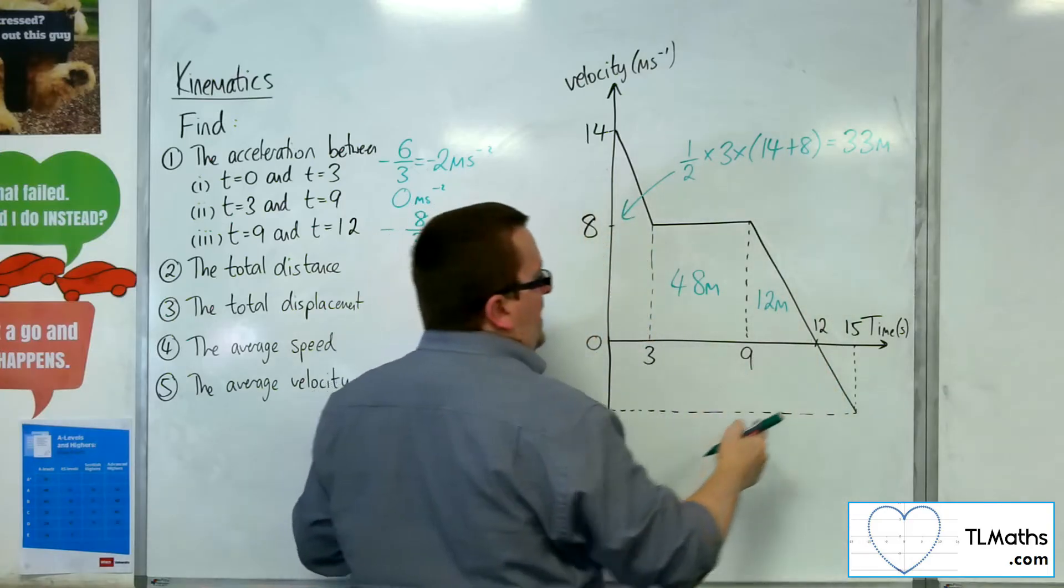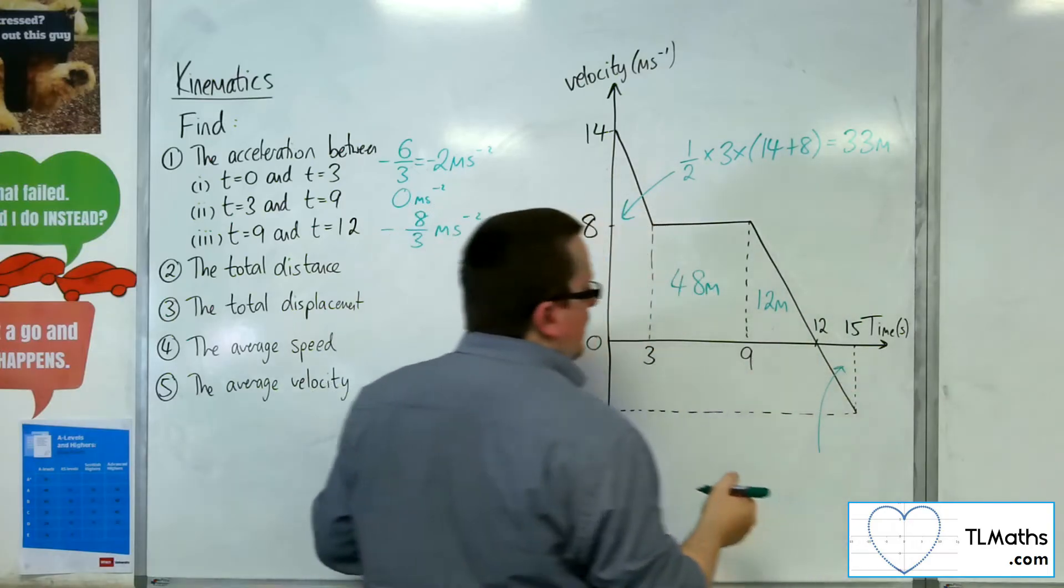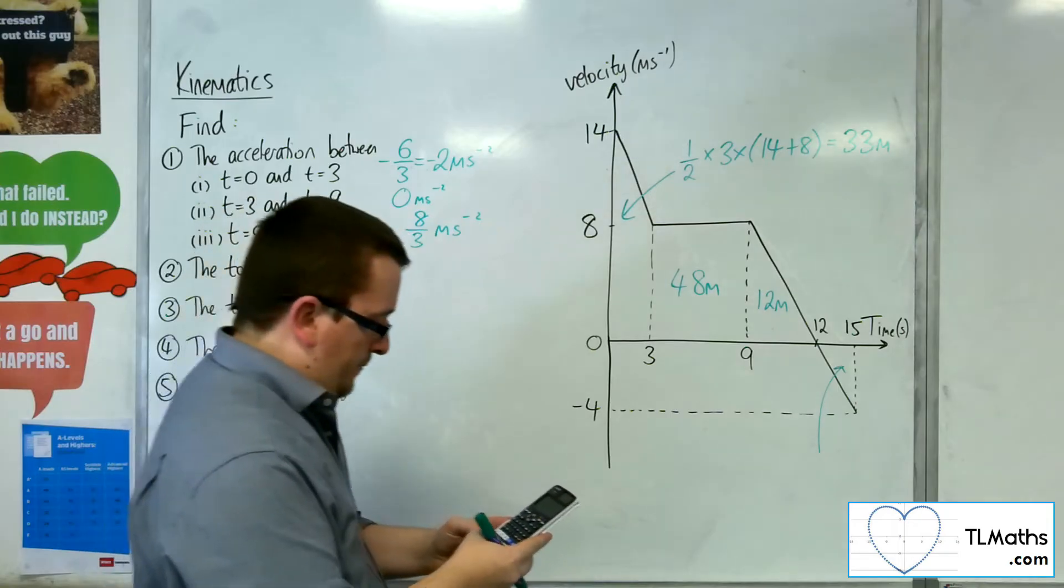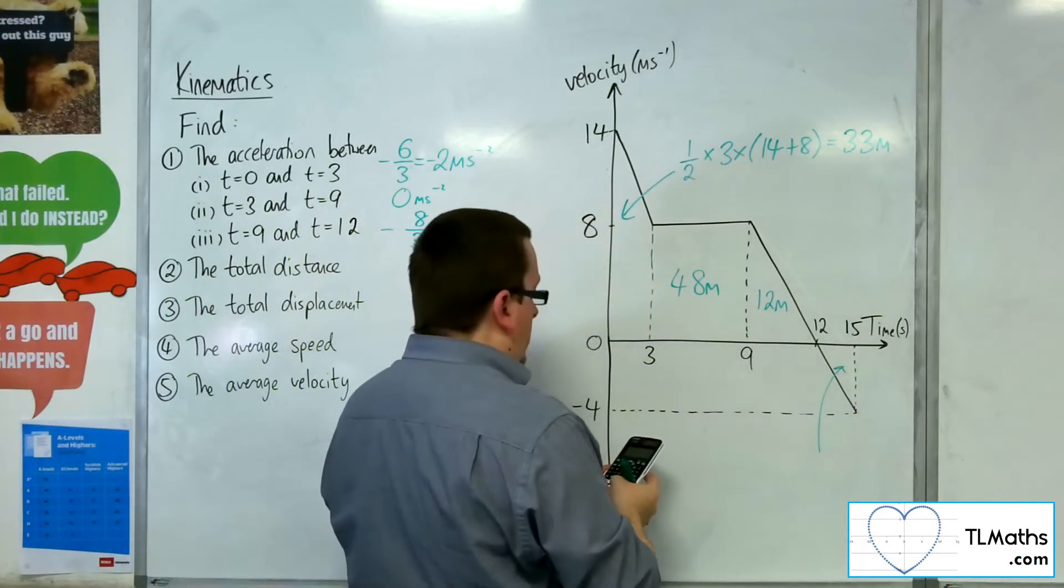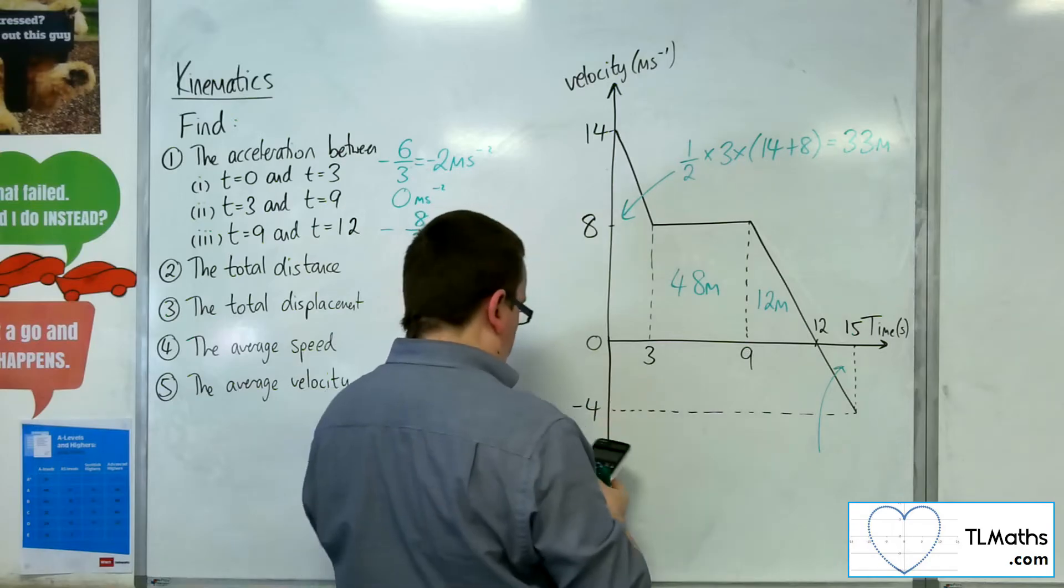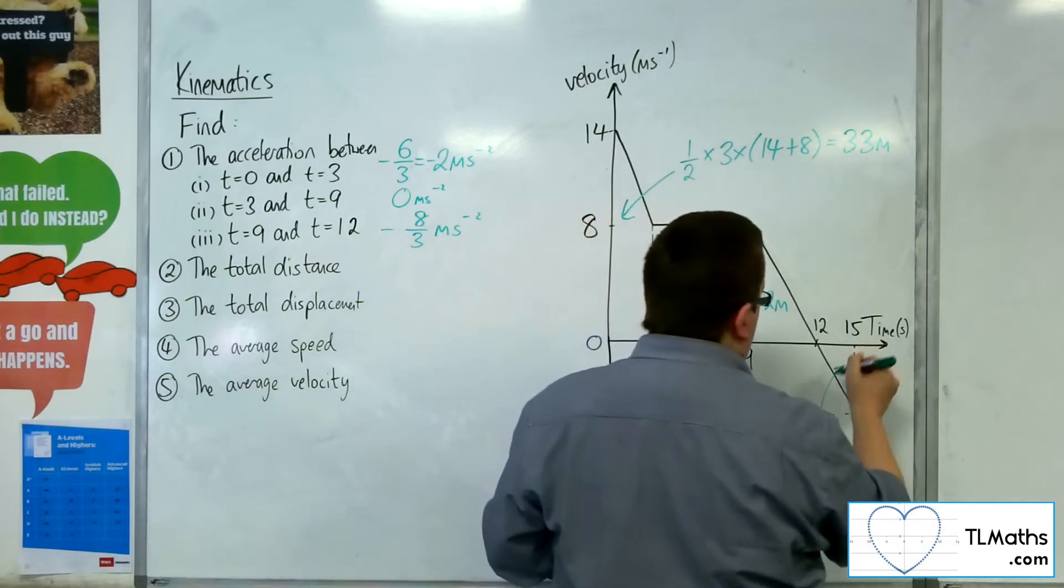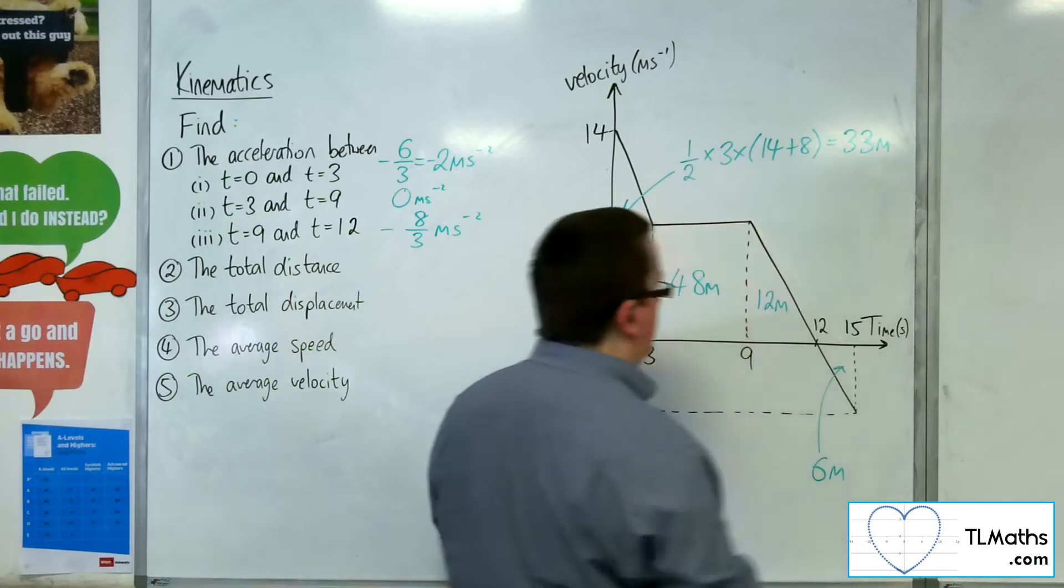And finally we've got this little triangle down here, so we've got 1 half times by the base times by the height. So that gets us 6 metres.